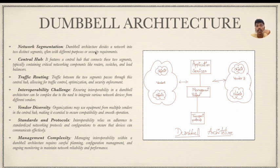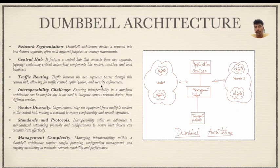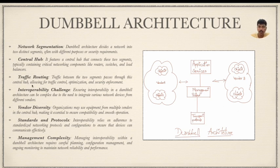Network segmentation in dumbbell architecture divides the network into two distinct segments, often with different purposes or security requirements. It features a central hub that connects these two segments, typically containing critical network components like routers, switches, and load balancers. Traffic between the two segments passes through this central hub, allowing for traffic control, optimization, and security enforcement.